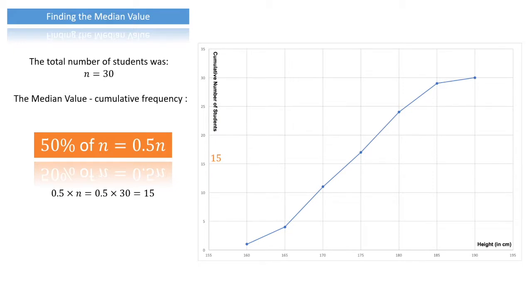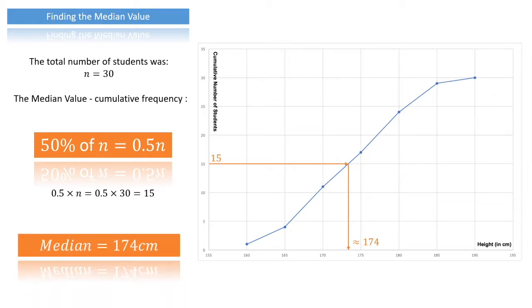To find the median value we draw a horizontal line from the vertical axis up to the curve, and then we draw a vertical line from the curve down to the horizontal axis. The median value is read off the horizontal axis. This is an estimate — looking at the graph it seems the median is somewhere between 173 and 174, so we write it's approximately 174 centimeters.